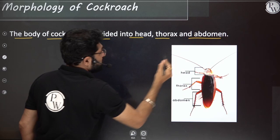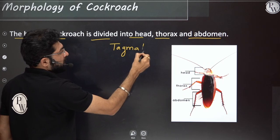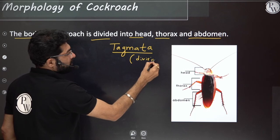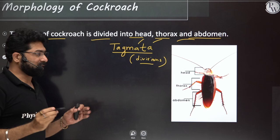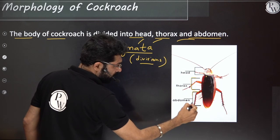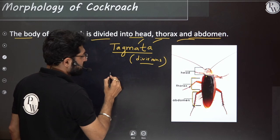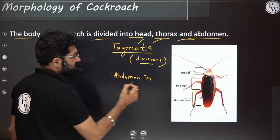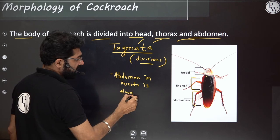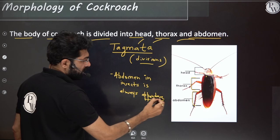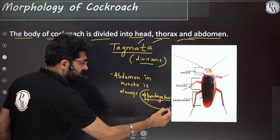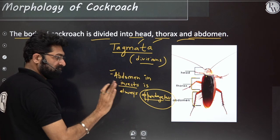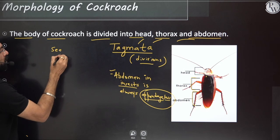The body of cockroach is divided into head, thorax and abdomen — these divisions are called tagmata. You can see the head, thorax and abdomen regions clearly. A very important point: in insects, the abdomen is always appendage-less — that means no appendages come out of the abdomen. Please remember this.